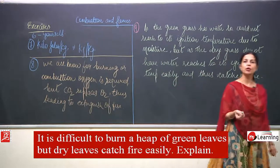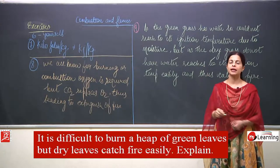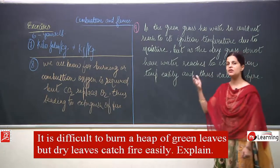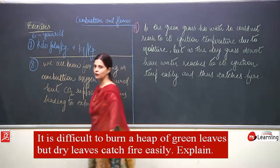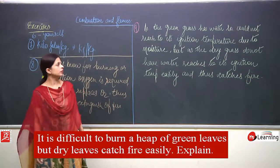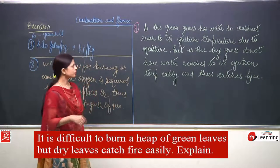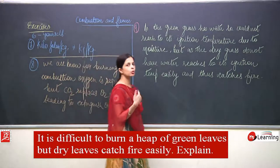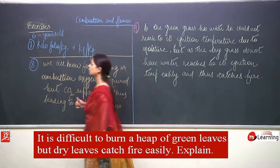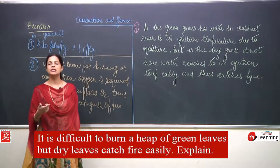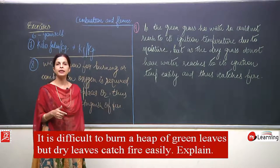It is important to understand that until a substance reaches its ignition temperature, it cannot catch fire. It is of utmost importance that a substance reaches that minimum temperature required to catch fire. This was the explanation for why green grass does not burn while dry grass burns very easily.